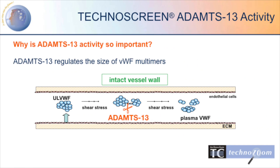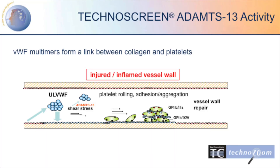ADAMTS13 is an enzyme that regulates the size of von Willebrand factor multimers. When having an injured or inflamed vessel wall, von Willebrand factor multimers form a link between collagen and platelets.